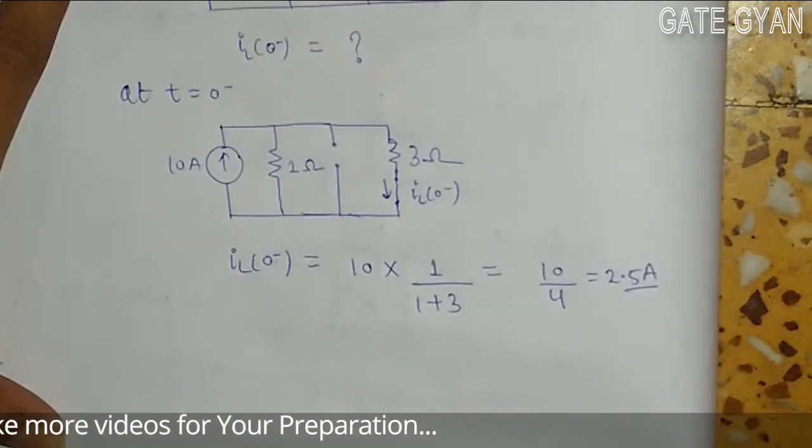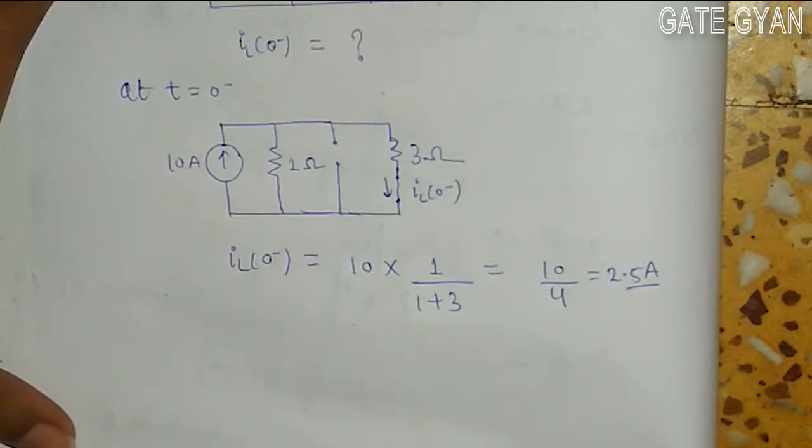So, current at t = 0- is going to be 2.5 ampere.